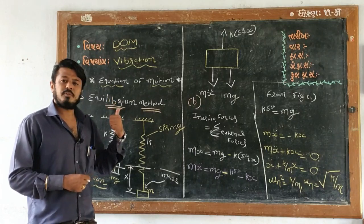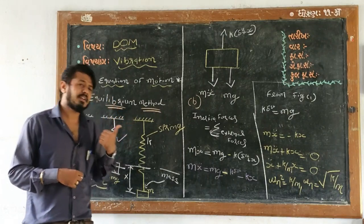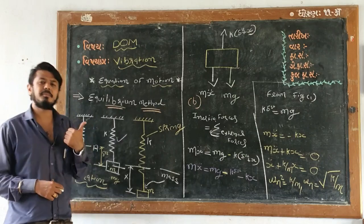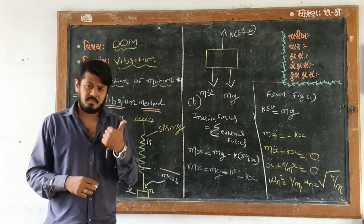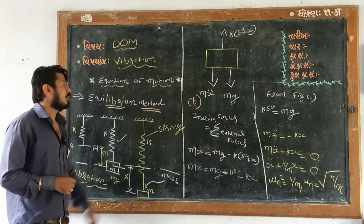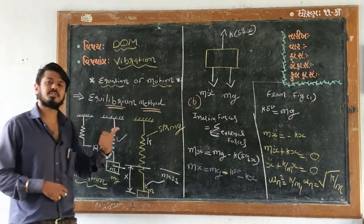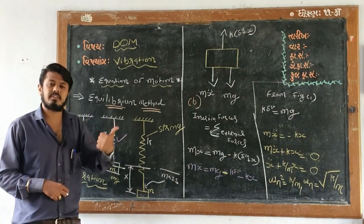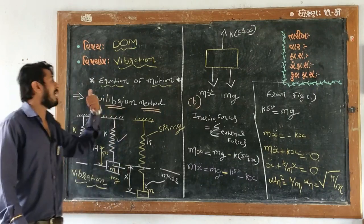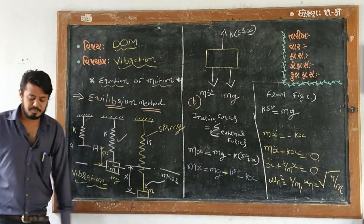For finding out the natural frequency, we have three different methods. The first one is the equilibrium method, the second one is the energy method, and the third one is the Rayleigh method. We will find the equation of motion and the natural frequency of vibration today by using the equilibrium method.